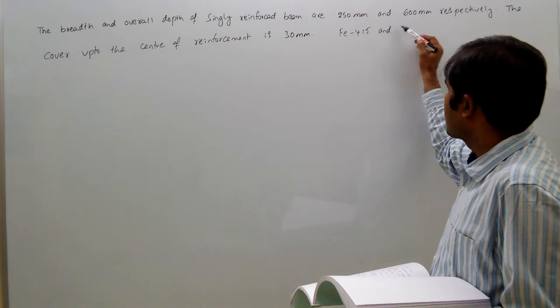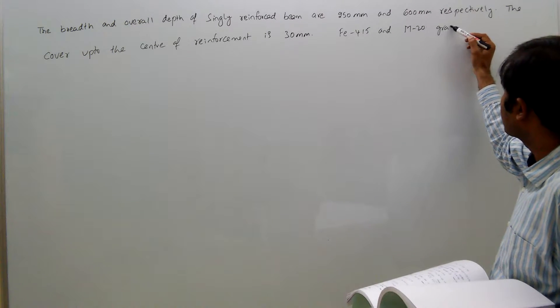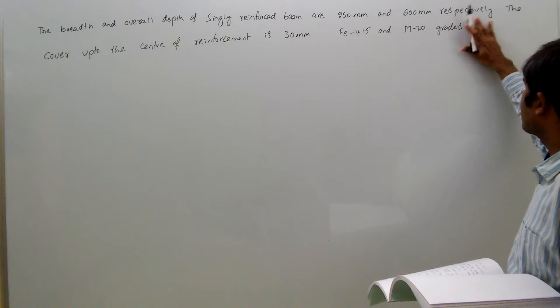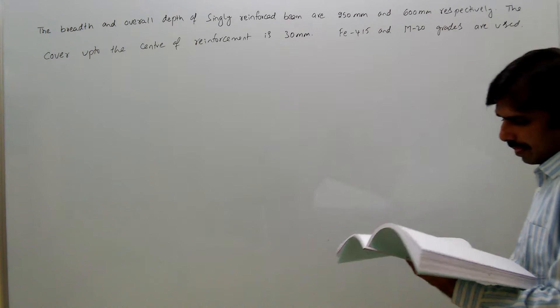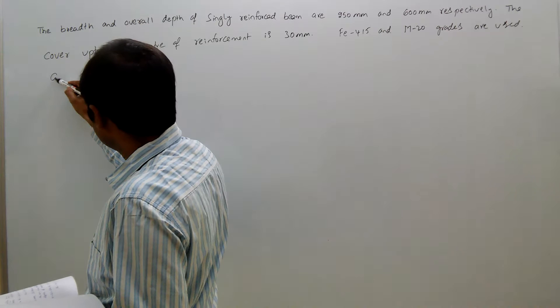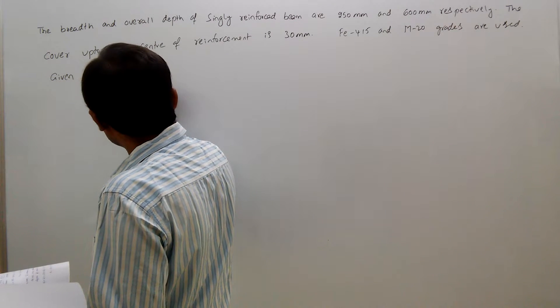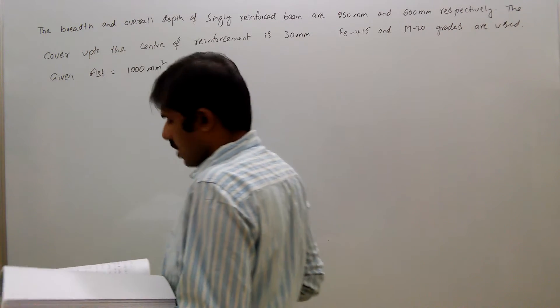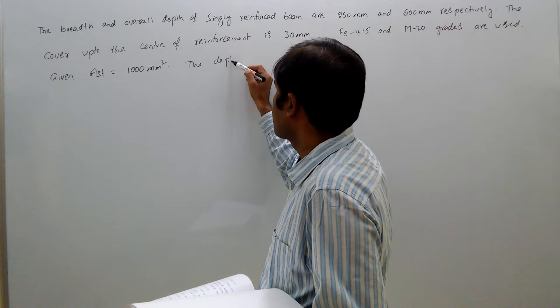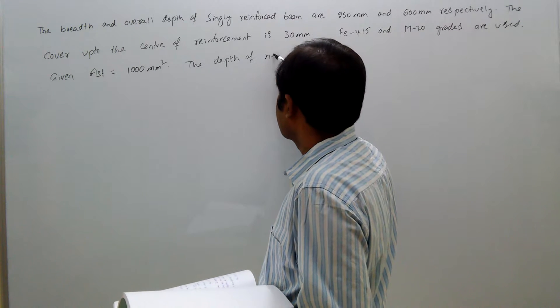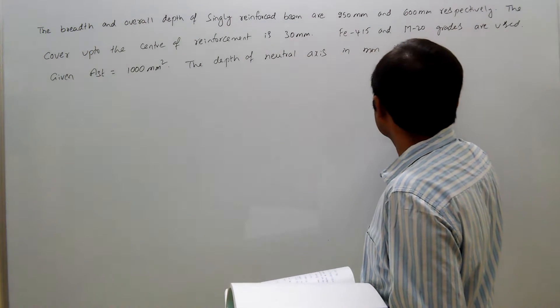Fe415 and M20 grades are used. Given AST equal to 1000 mm², the depth of neutral axis in millimeters is to be determined.